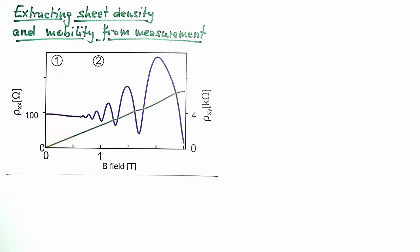We start from the Drude expressions for the longitudinal resistivity, which we previously called rho_L, which is given by 1 divided by the sheet density of electrons times the elementary charge times the mobility, and the transverse resistivity rho_xy, which we previously called the Hall resistivity rho_H, which is given by 1 divided by the elementary charge times the sheet density.